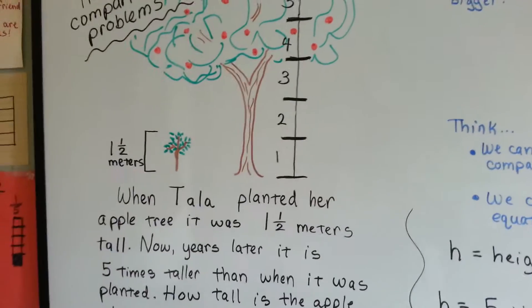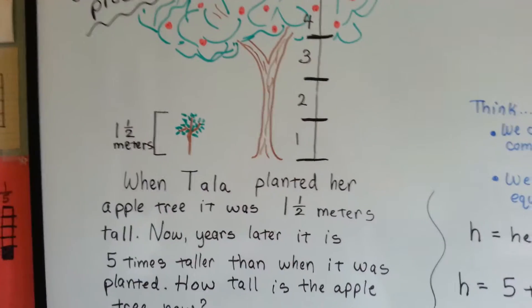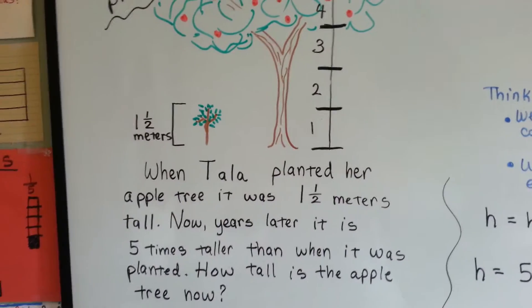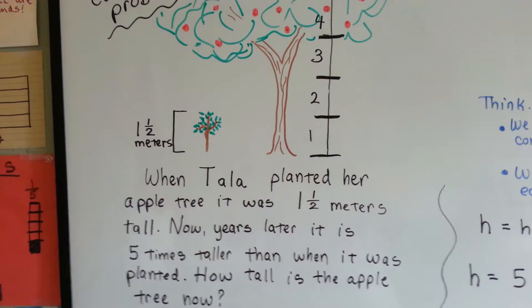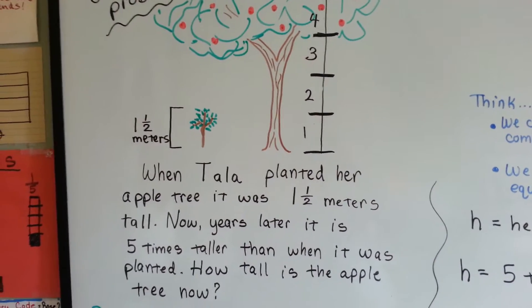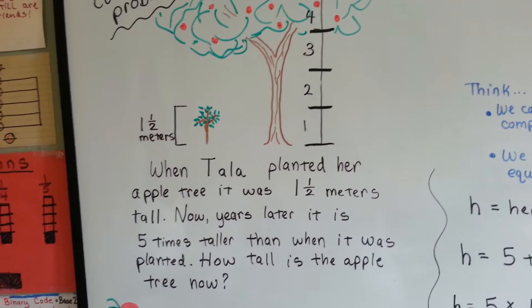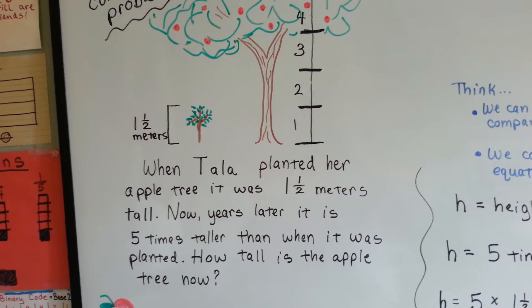So here's our word problem. When Tala planted her apple tree, it was one and a half meters tall. It was just a little baby tree. Now, years later, it is five times taller than when it was planted. How tall is the apple tree?